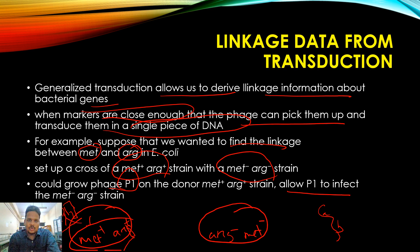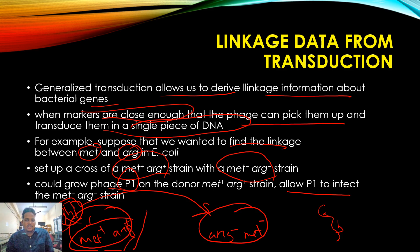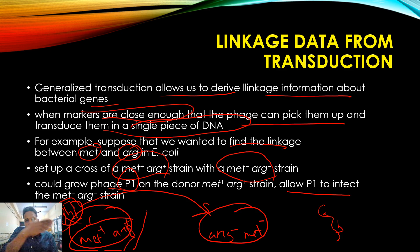If these two genes are close together, then in these bacteria, if they are not able to grow on that media, that means both were transferred together — meaning the arginine and methionine genes were co-transduced as a pair.